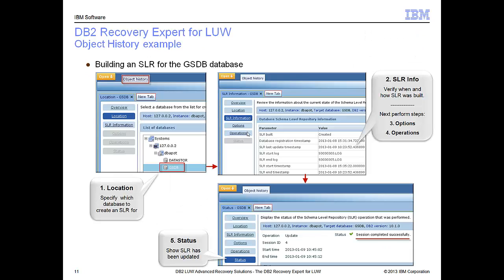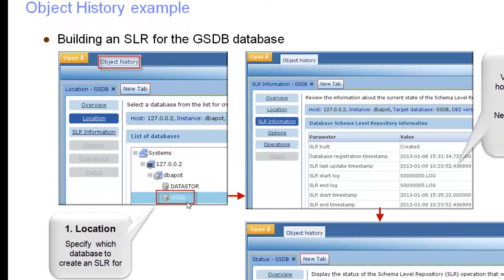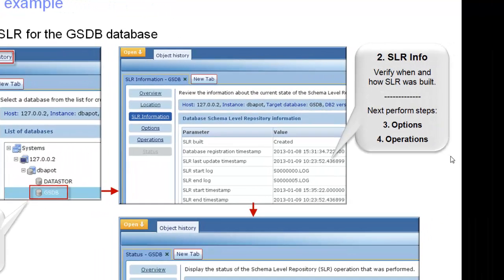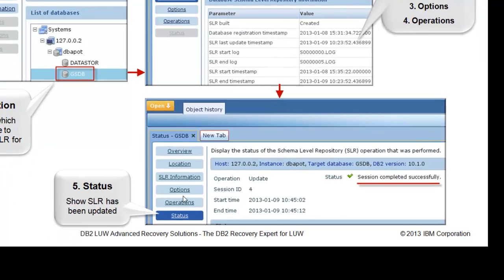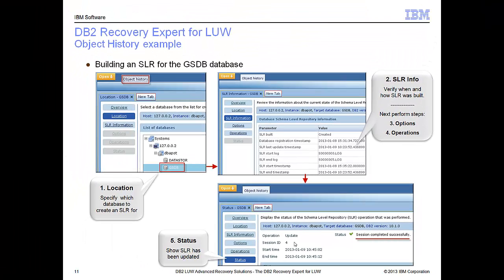To build and maintain the SLR is simple in the UI. You choose the Object History option, choose the database — in this case GSDB — then click Create. You can specify where backups may be located and other options through the UI. The SLR will be created the first time, and after that, updating it follows the same process and will be quicker each time.